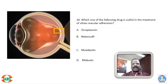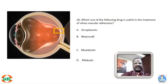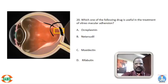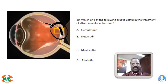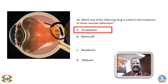Question 20: Which drug is useful in the treatment of vitreomacular adhesion? Options: ocriplasmin, netarsudil, moxidectin, rifabutin. The right answer is ocriplasmin — useful for treating vitreomacular adhesion.